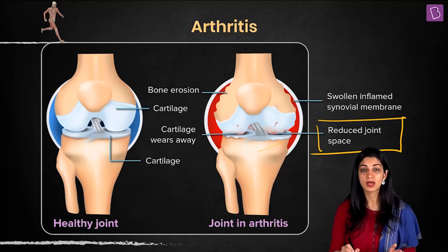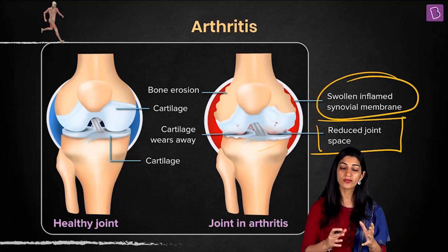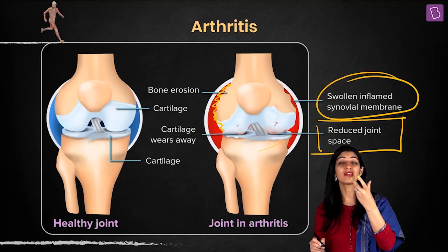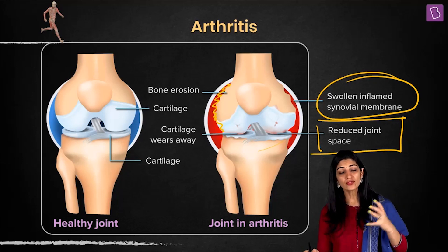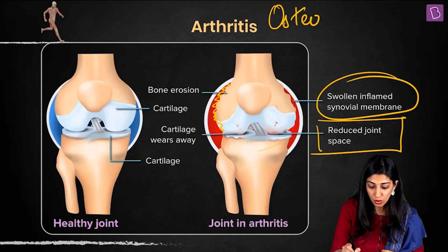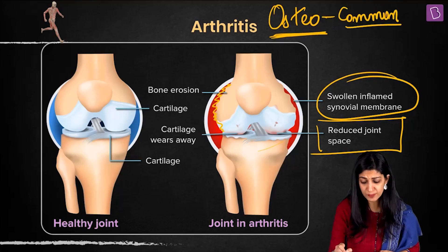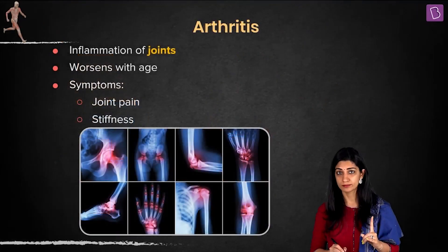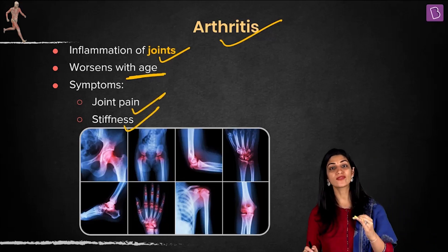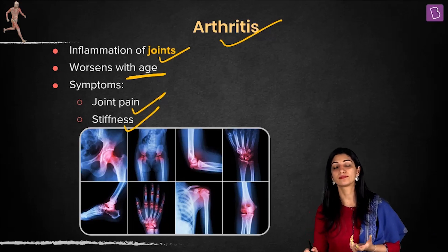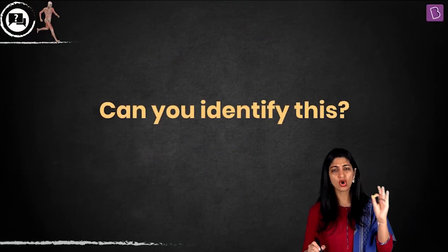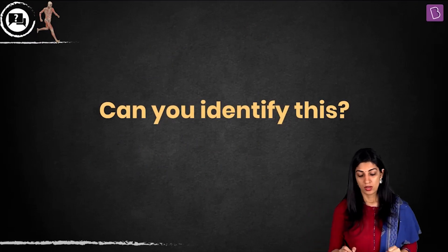With reduced bone space, the joint portion becomes swollen and bone erosion takes place, leading to inflammation and pain. Arthritis is of many types, but the most common in old age is osteoarthritis. Arthritis is inflammation of joints — an age-related disorder with pain and stiffness. The stiffness occurs because the lubricant — synovial fluid — is reduced. These are sure short exam questions.